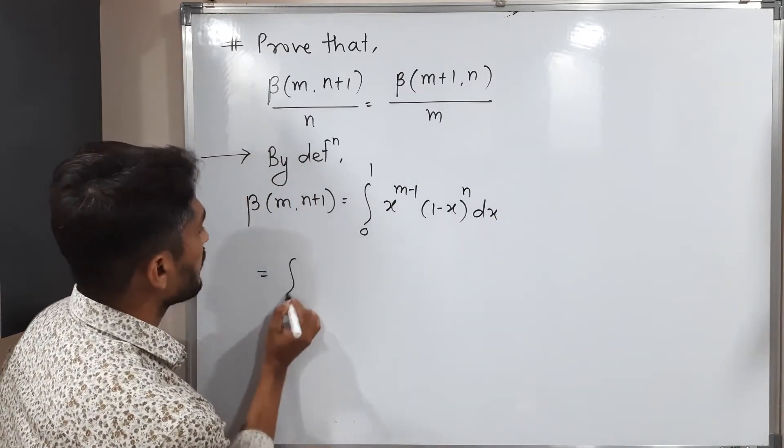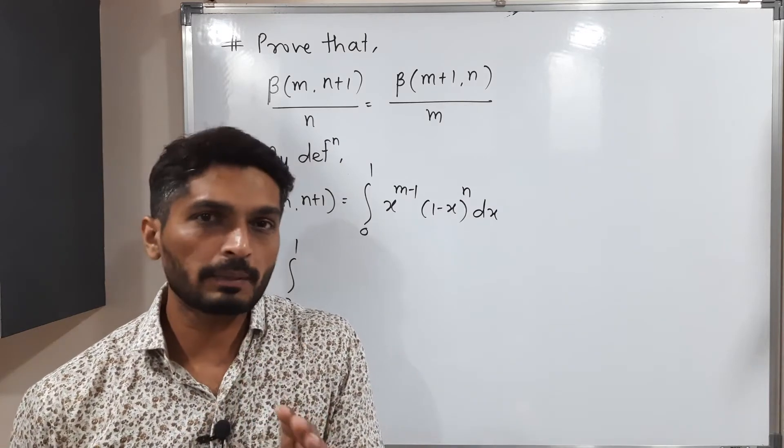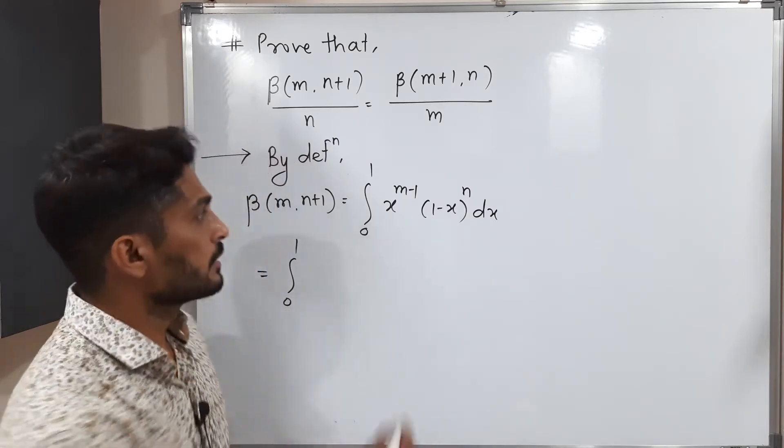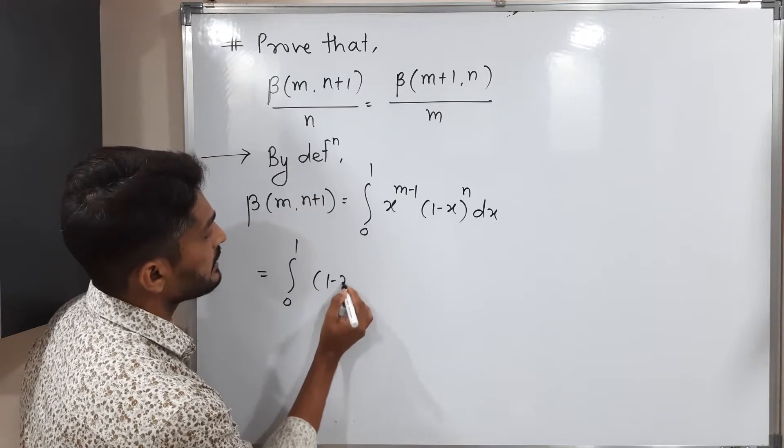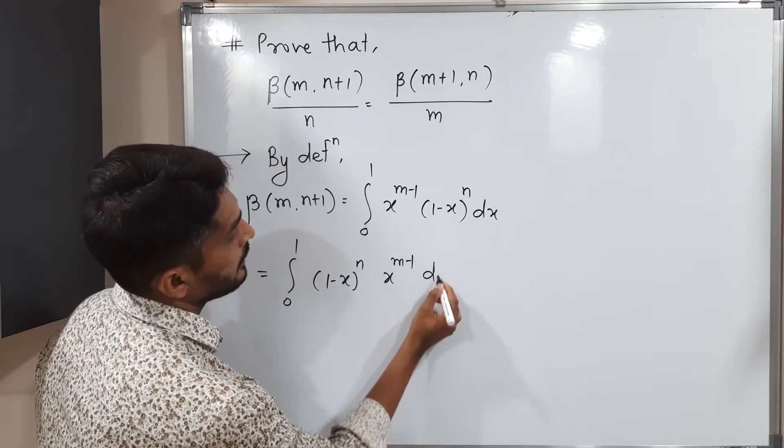This is equal to integration 0 to 1. What will I do? I will interchange them. If there is multiplication, you can easily interchange. So that's why I'm writing 1 minus x raised to n first, and x raised to m minus 1 dx.